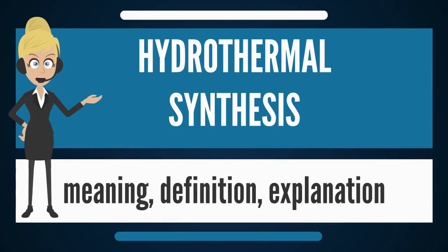In 1845, he grew microscopic quartz crystals in a pressure cooker. In 1848, Robert Bunsen reported growing crystals of barium and strontium carbonate at 200 degrees Celsius and at pressures of 15 atmospheres using sealed glass tubes and aqueous ammonium chloride as a solvent. In 1849 and 1851, French crystallographer Henri Hureau de Sénarmont (1808–1862) produced crystals of various minerals via hydrothermal synthesis.